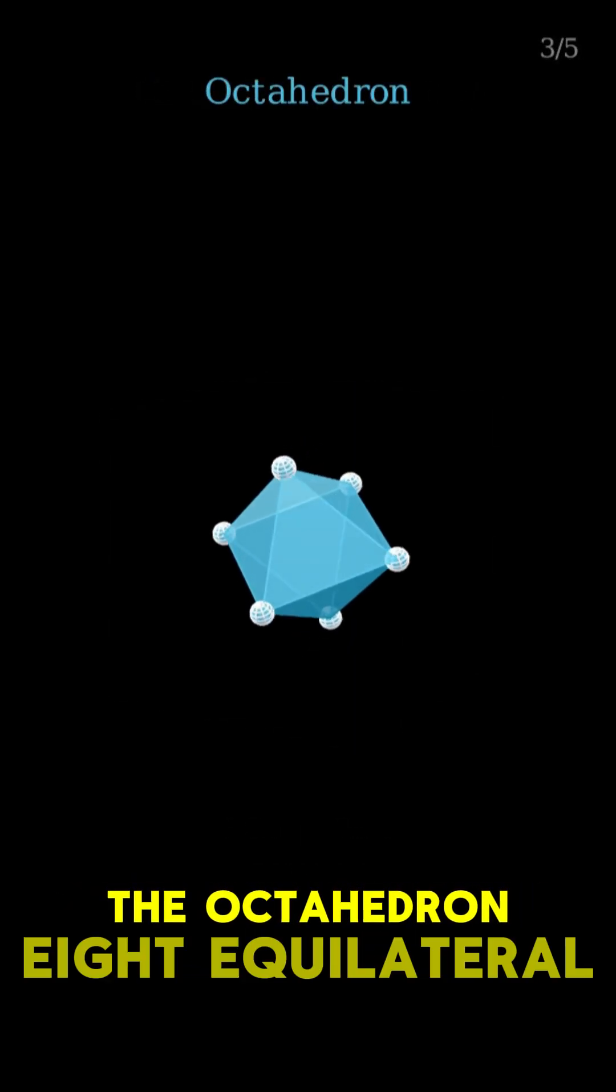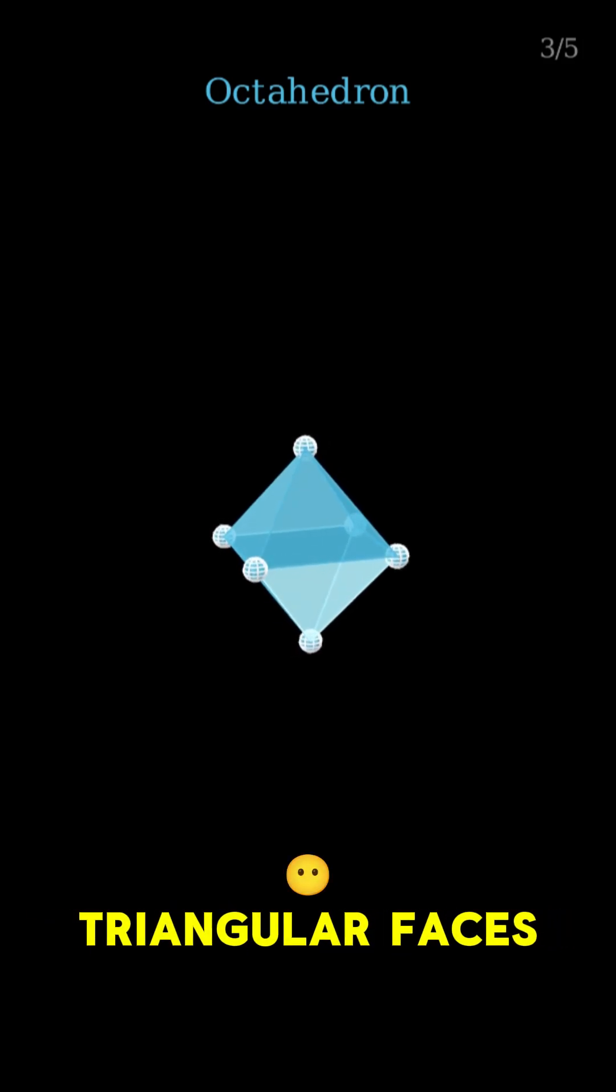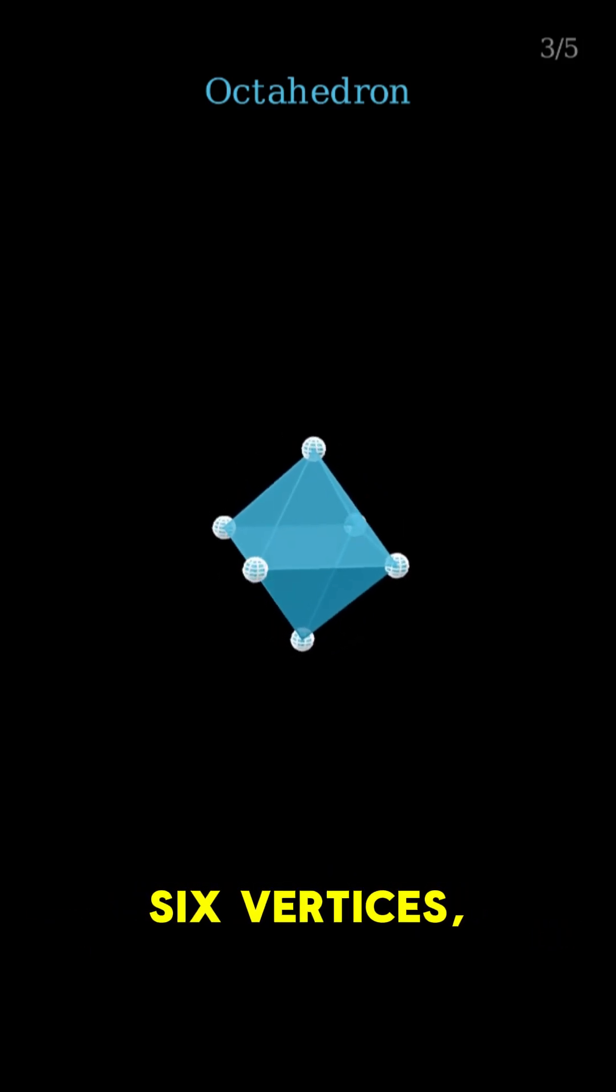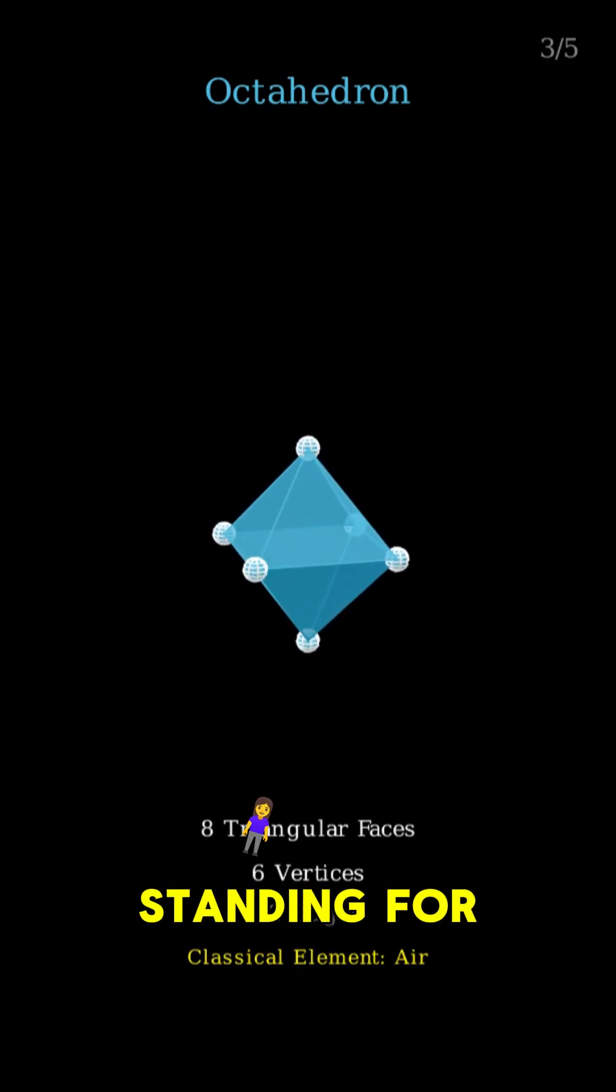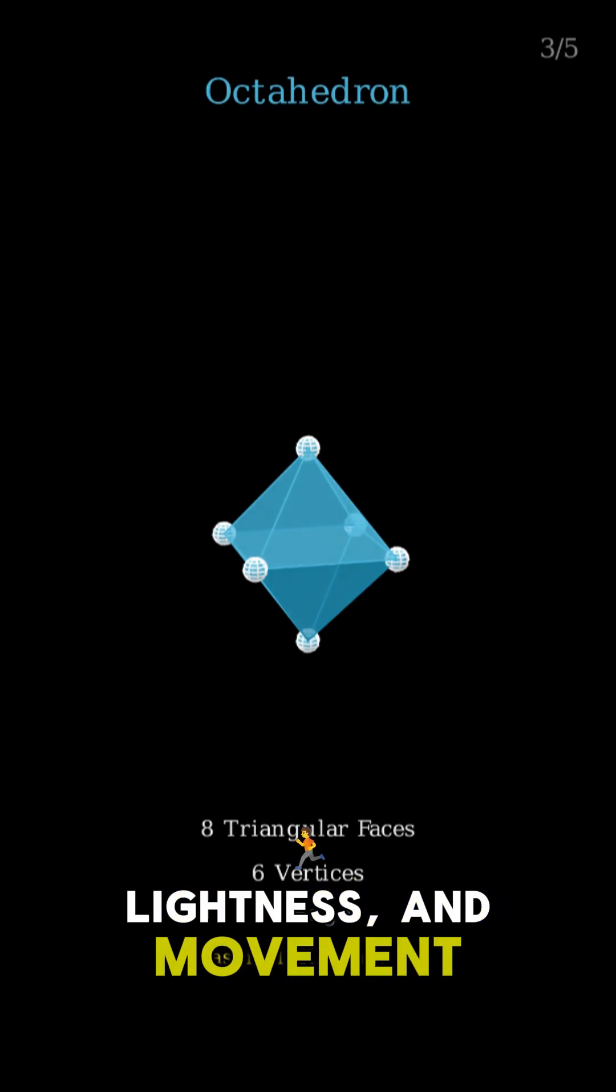Then, the octahedron. Eight equilateral triangular faces, six vertices, 12 edges, standing for air, lightness, and movement.